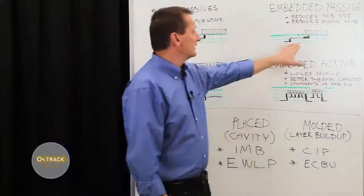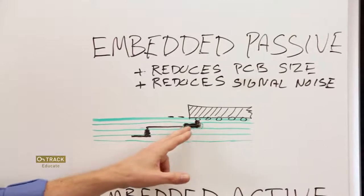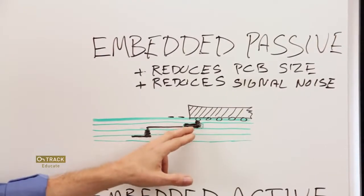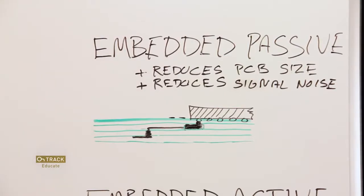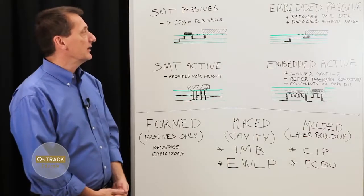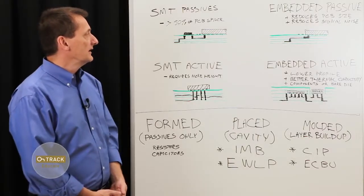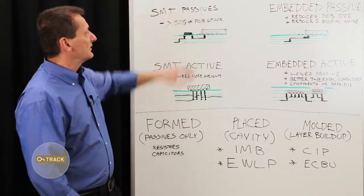The benefit is that when things are run internally only to an embedded component, there is less parasitic capacitance and inductance and therefore less noise. So a great benefit there for embedding components. Now that's just the passive side of things.